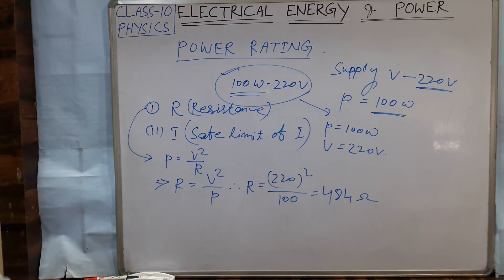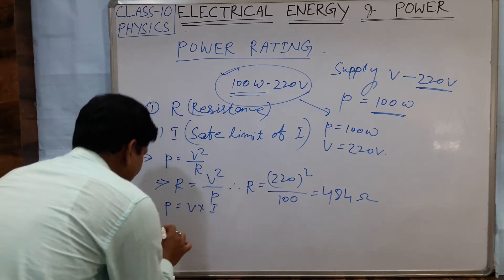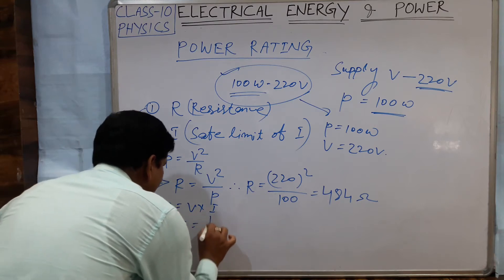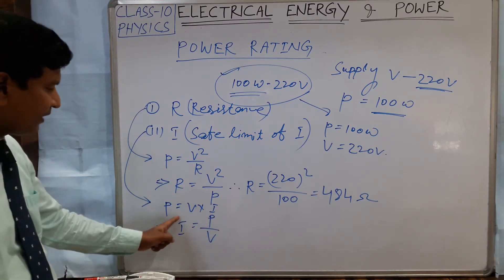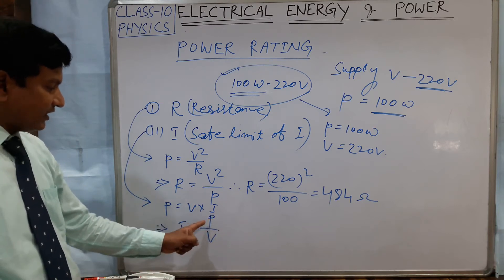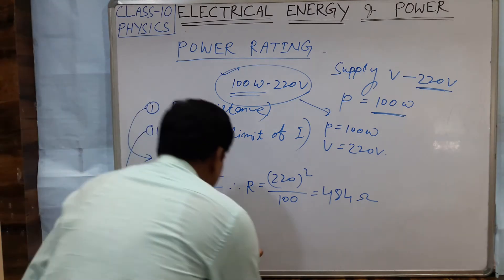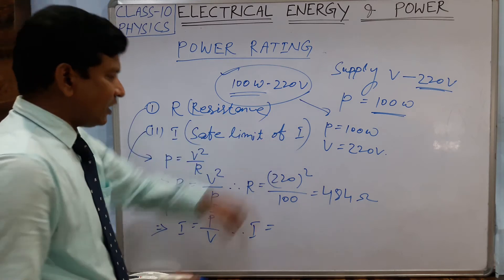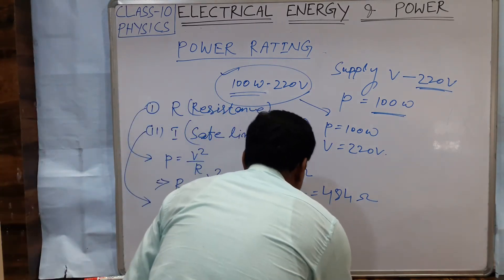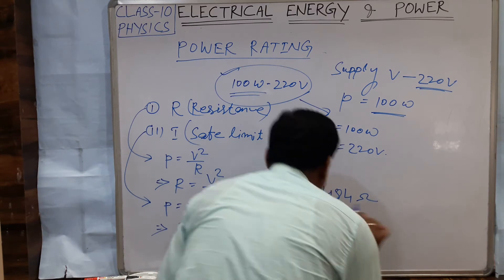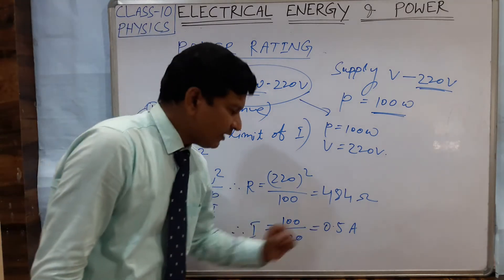The safe limit of current can be found from the expression P = V × I, so I = P / V. The power rating divided by the voltage rating gives the safe limit of current. In this example, current I = 100 watt / 220 volt, which is approximately 0.5 ampere. So the safe limit of current through the filament of the bulb is 0.5 ampere.